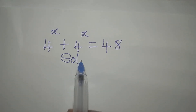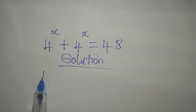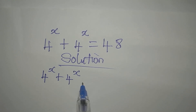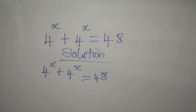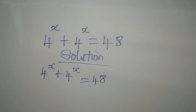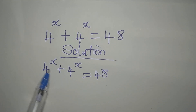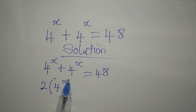Hi everyone, let's solve this equation: 4 to the power of x plus 4 to the power of x equals 48. Before I provide the solution, subscribe to my channel if you're new and share with friends. Let's start — 4 to the power of x appears in two places, so that means we have 2 times 4 to the power of x, and this equals 48.